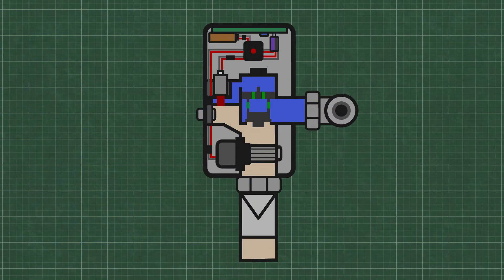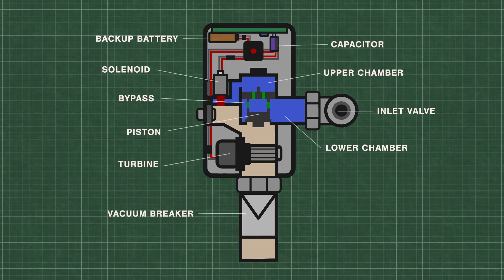Flushometers, or flush valves, are just automatically timed self-closing valves. At rest, water is at equal pressure in the upper and lower chambers. This keeps the piston closed tightly on the valve seat.